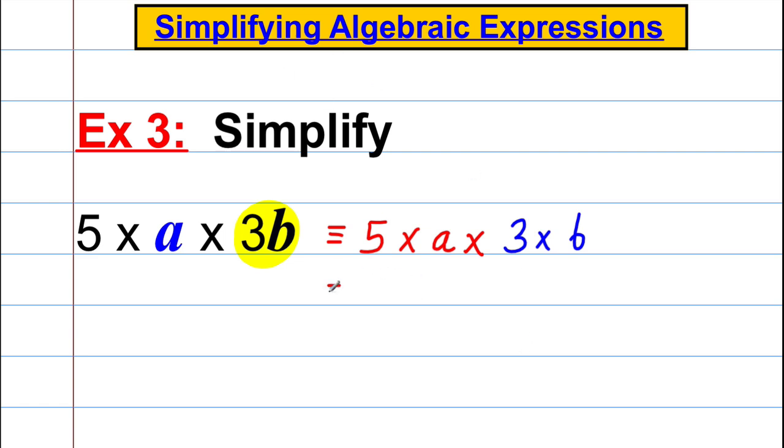And we can rearrange this in any order we want. So what we might do is we might do the 5 multiplied by the 3 at the front, multiplied by the a multiplied by the b at the end, which would be 15ab.